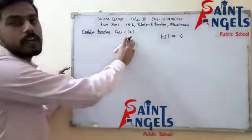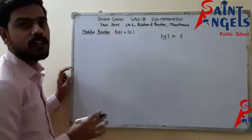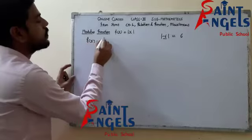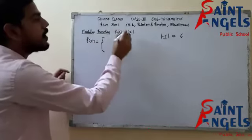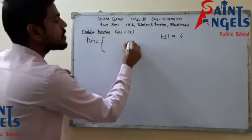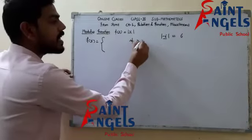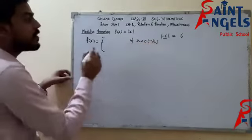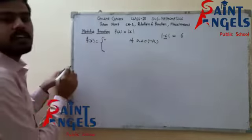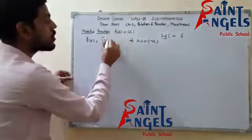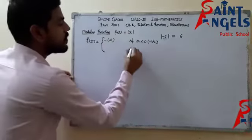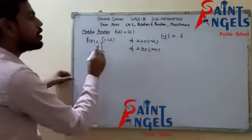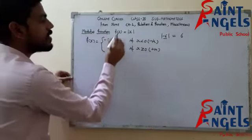So f(x) equals modulus of x. The actual definition of modulus function: if x inside the modulus is less than 0, meaning x is negative, then modulus puts an additional negative before x. And if x is greater than or equal to 0, meaning positive, then modulus simply gives the value of x as is.